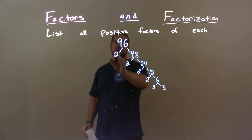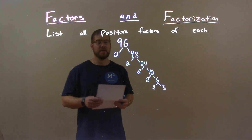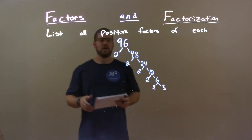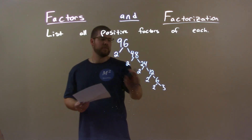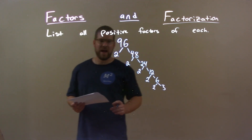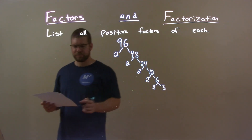So now we have all of our prime numbers that multiply to be 96. Now we can acquire a list of all the numbers that multiply together to equal 96 using these prime numbers.